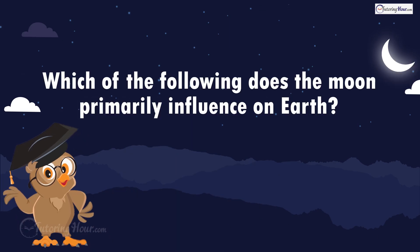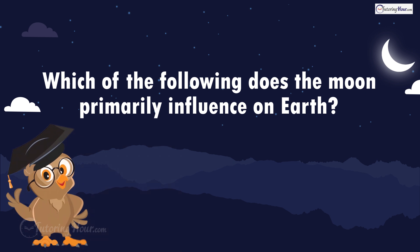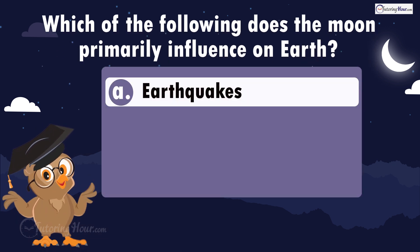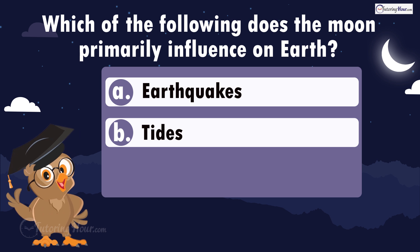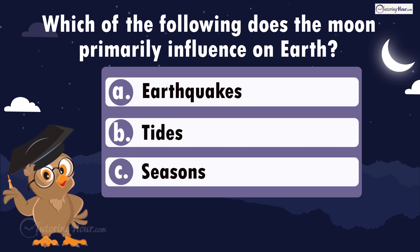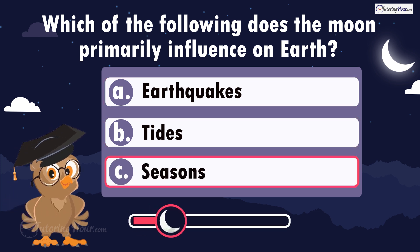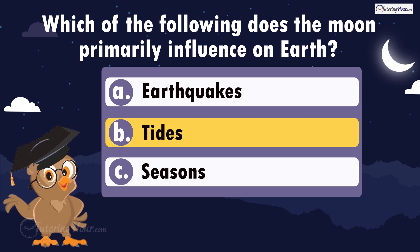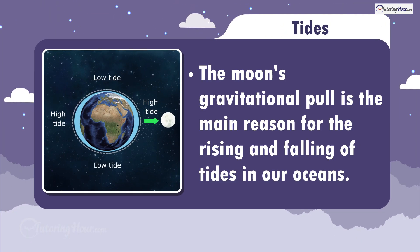Which of the following does the moon primarily influence on Earth? Is it A, earthquakes; B, tides; or C, seasons? The correct answer is tides. The moon's gravitational pull is the main reason for the rising and falling of tides in our oceans.